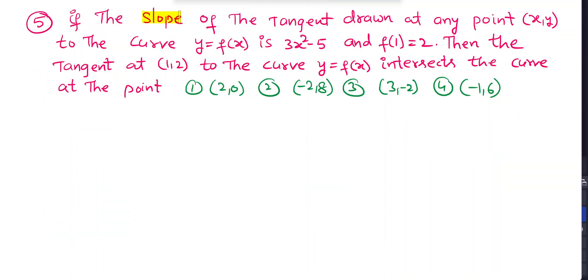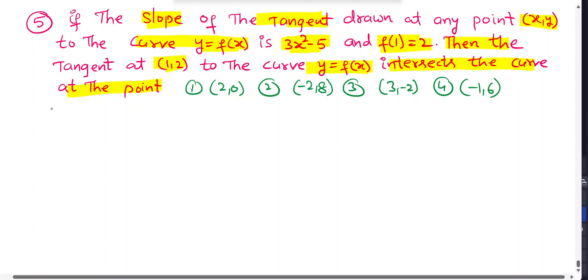This is the fifth question. If the slope of the tangent drawn at any point (x, y) to the curve y = f(x) is 3x² - 5, and f(1) = 2, then find where the tangent at (1, 2) intersects the curve. The slope of the tangent means dy/dx = 3x² - 5.